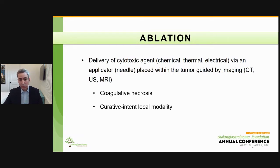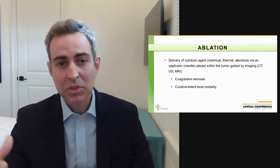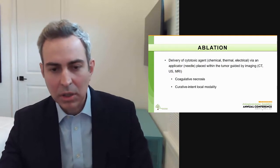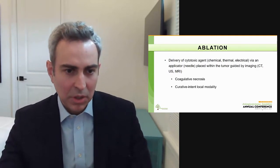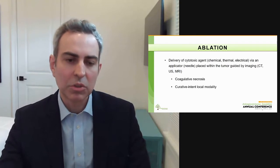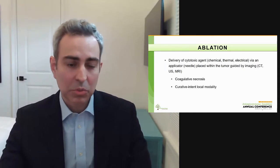When we apply ablation, we create coagulative necrosis within the tumor. Every time we apply ablation, we want to apply a local therapy with curative intent — the bar is extremely high. We want complete coverage and complete necrosis of the tumor, similar to surgery. We call this an R0 ablation, parallel to what they call R0 resection in the surgical literature. This is different from chemoembolization or radioembolization, where you are looking for objective response — either complete or partial. For ablation, we are always looking for complete response.